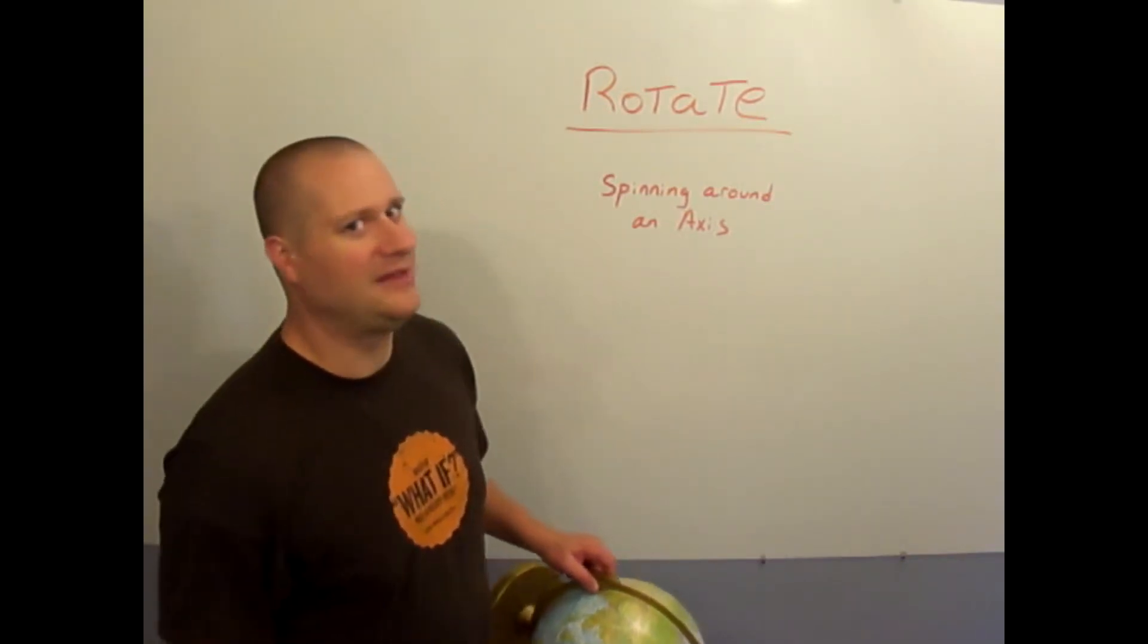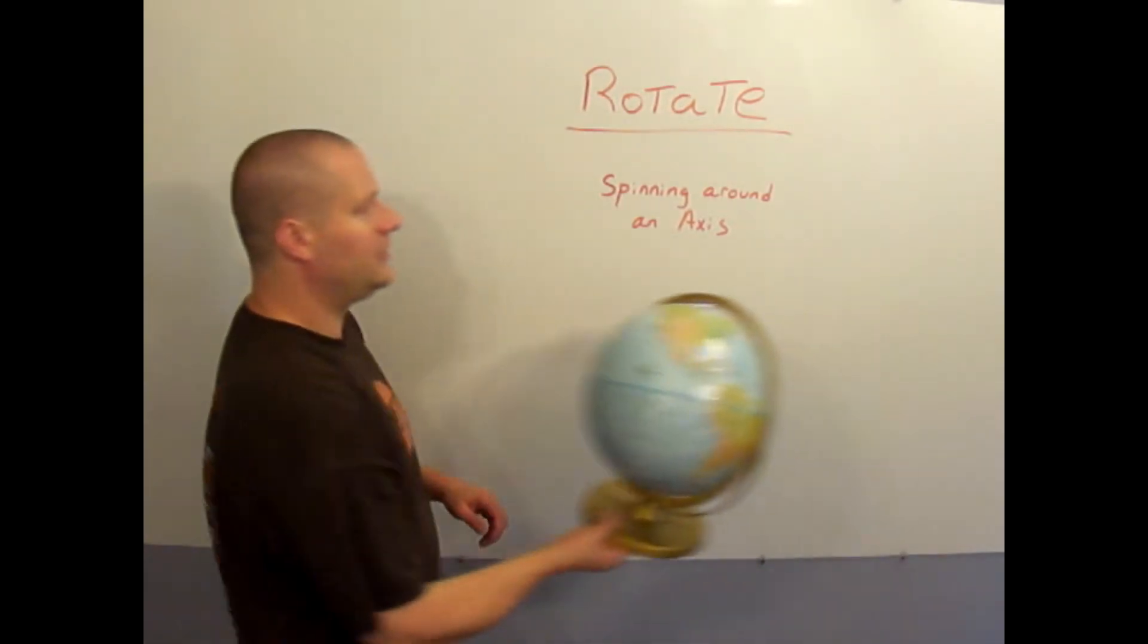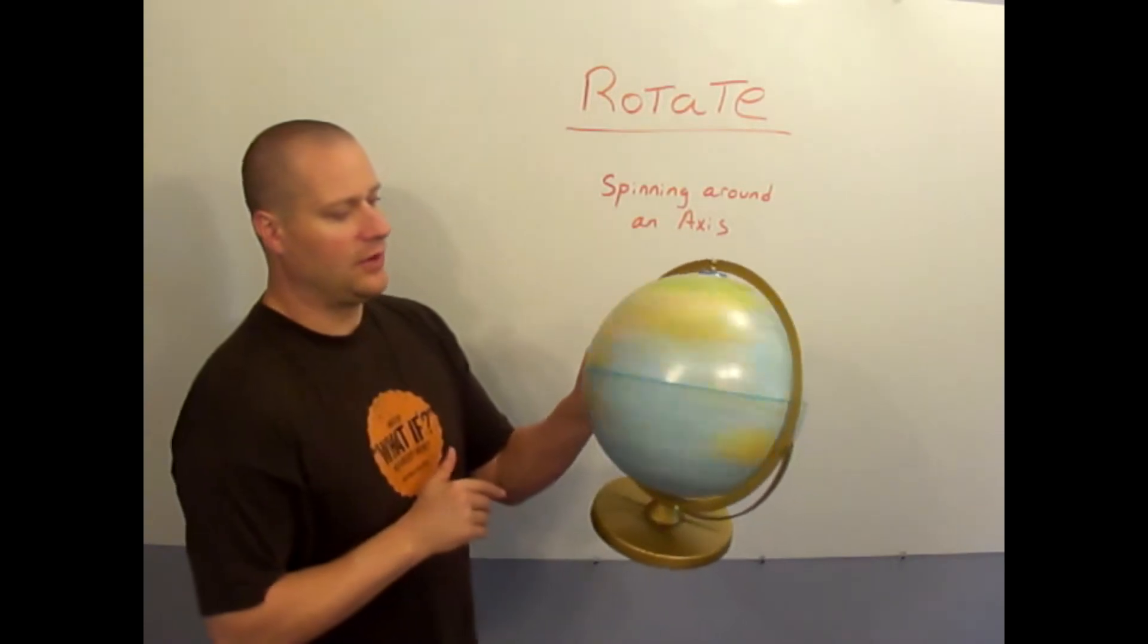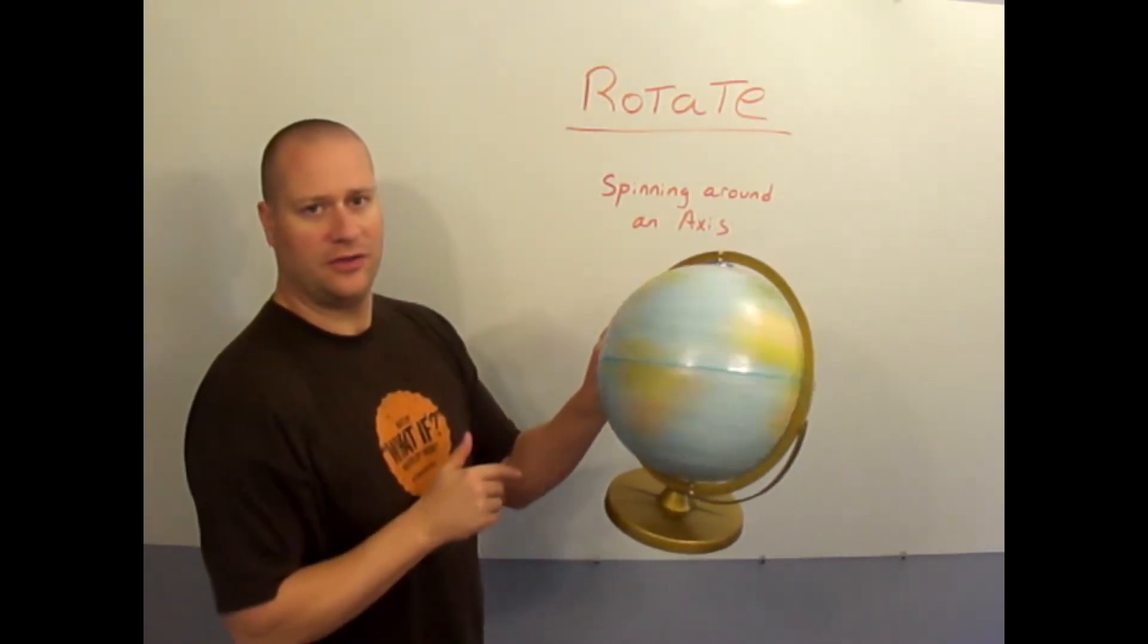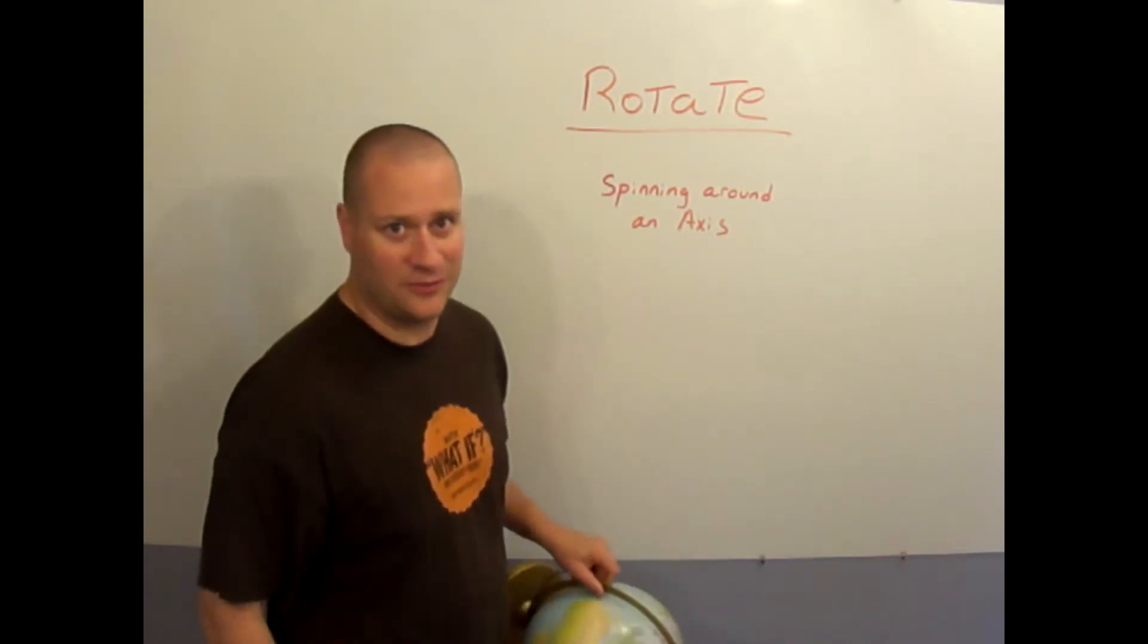The revolving of the earth around the sun, 365 days, causes the seasons. The rotation of the earth, 24 hours, causes day and night. We will study those more later.